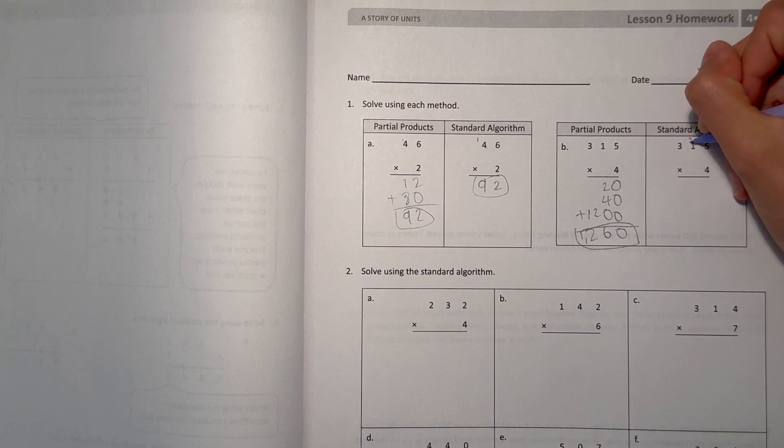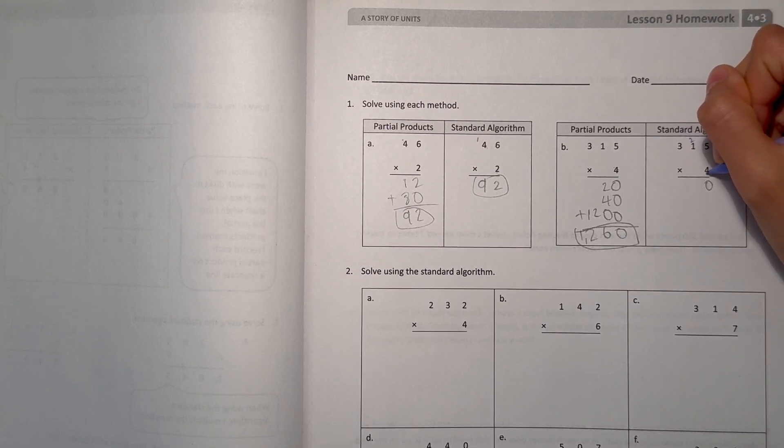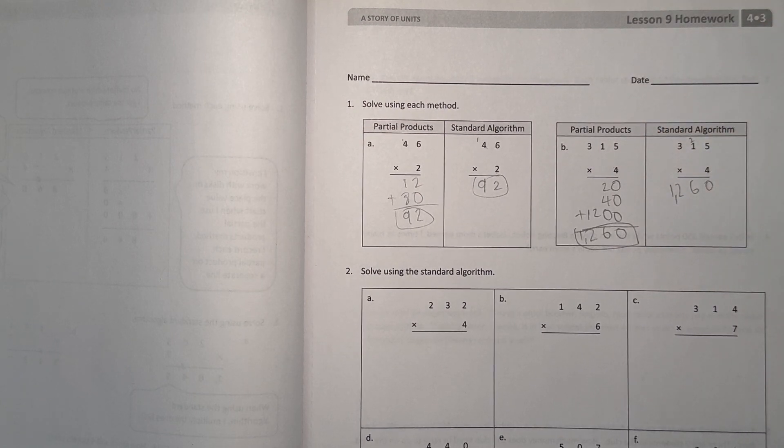The standard algorithm way, 5 times 4 is 20, 1 times 4 is 4, plus 2 is 6, and 3 times 4 is 12. So 1,260, that's what we get both ways.